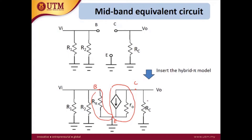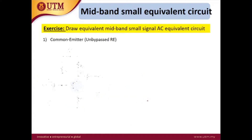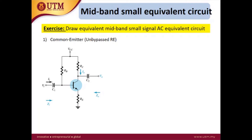Now let's do an exercise. The first example is a common emitter — the input is at the base and the output is at the collector, so the emitter is unused. There is no bypass capacitor, so this is an un-bypassed RE configuration.